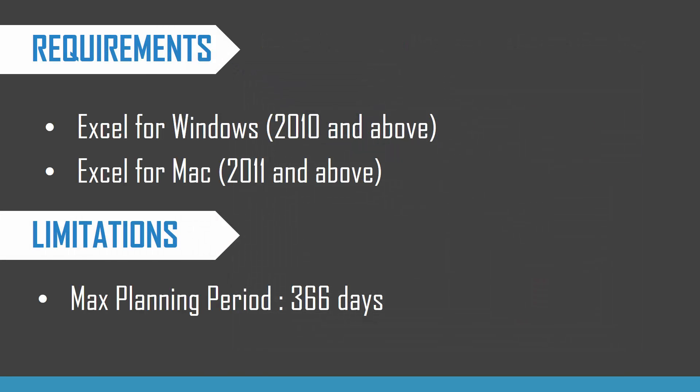All the metrics are automatically calculated. You can export this report to PDF or print it and share. The Excel template requires Microsoft Excel for Windows 2010 or above and Excel for Mac 2011 or above. The maximum planning period is 366 days by default, but you can extend it further if you know Excel formulas.